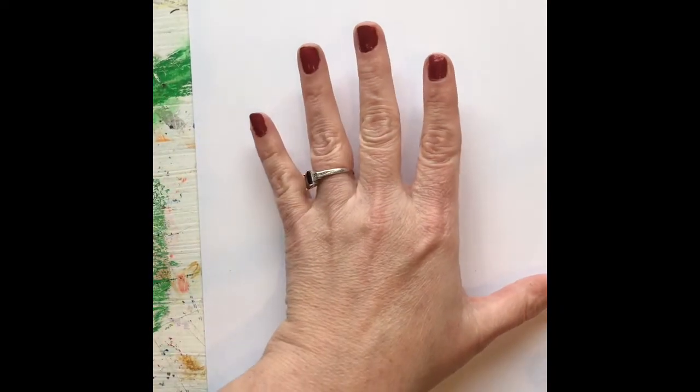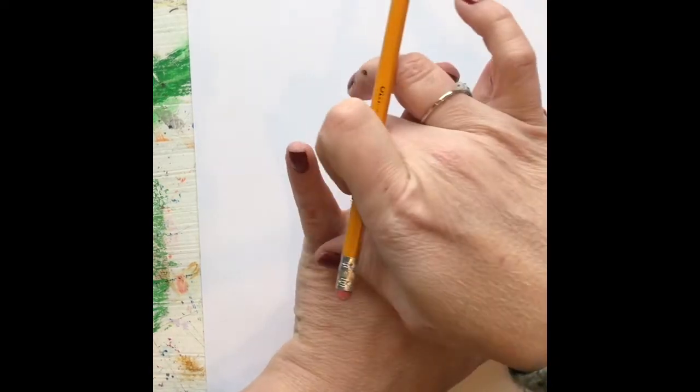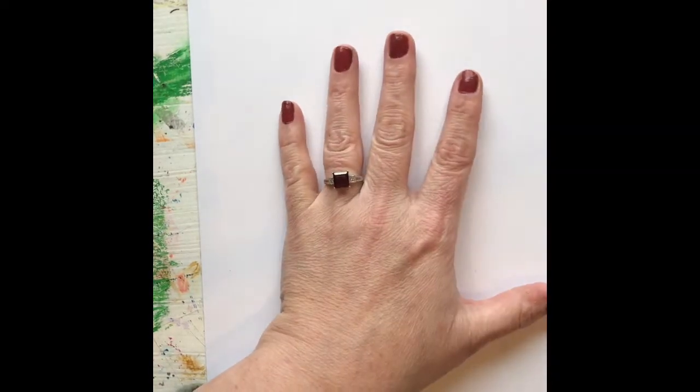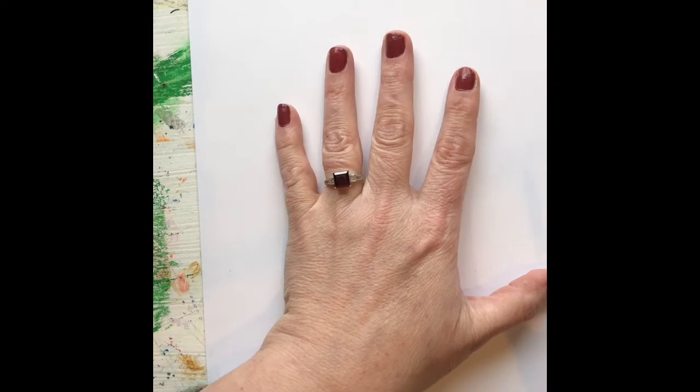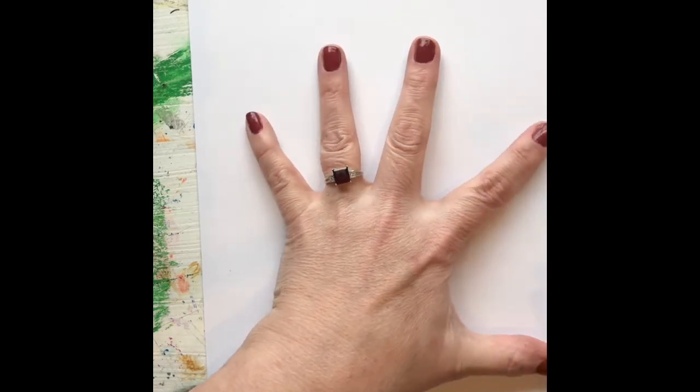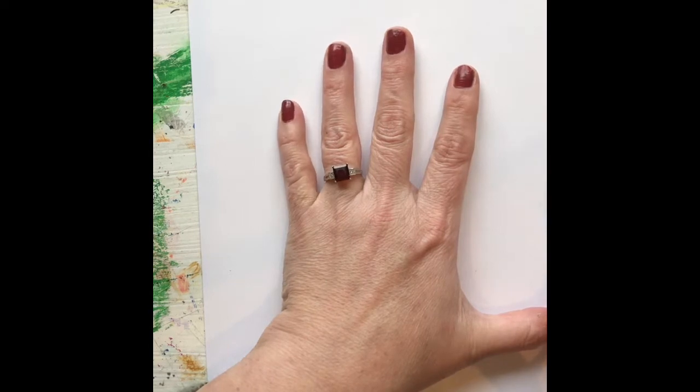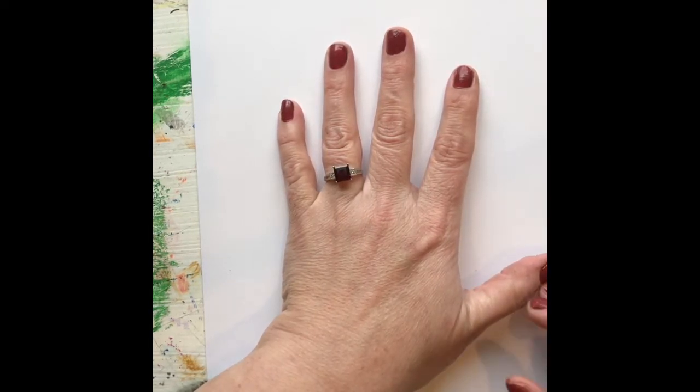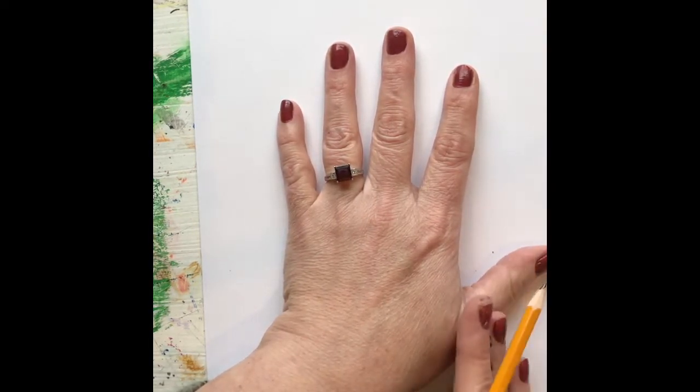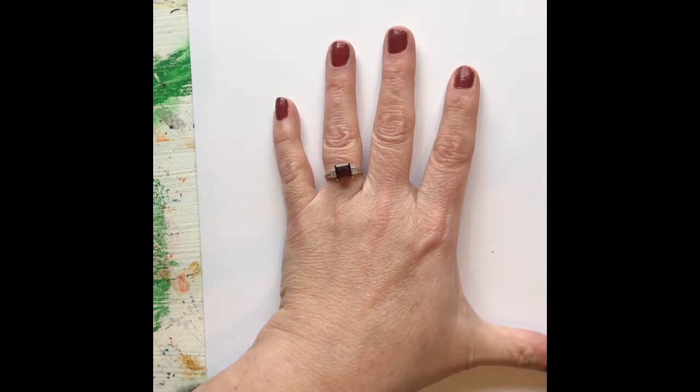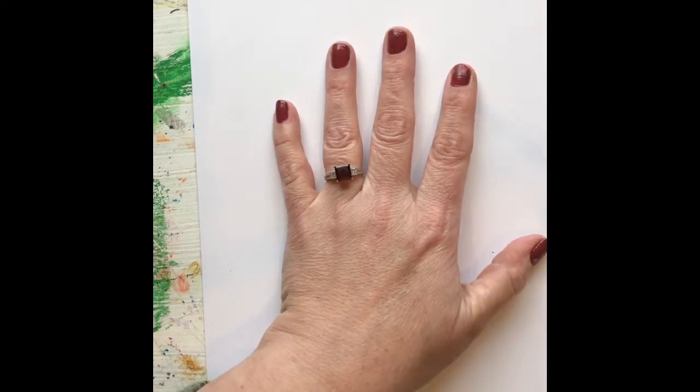So you're going to lay your hand down on your paper. Get my ring out of the way here. And you do want to make sure that your fingers are spread apart but you don't want them where they're going off too wide. So kind of try to keep them kind of straight with a little bit of a gap and try to move your thumb more at an angle as opposed to straight down.